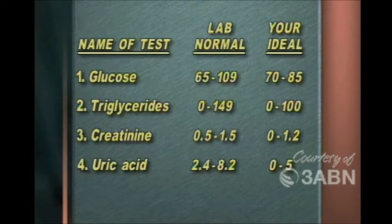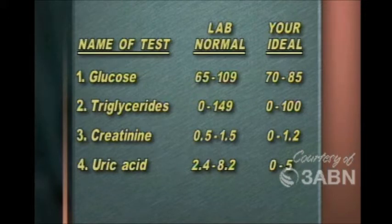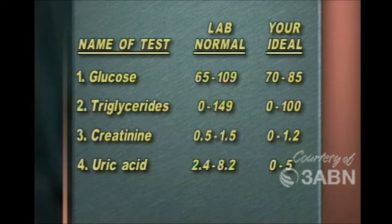Then the uric acid level, which is another aspect of all of this Syndrome X — the laboratory gives 2.4 to 8.2. But I don't like to see it any higher than 5. So if it's higher than 5, then it may be a problem for you.